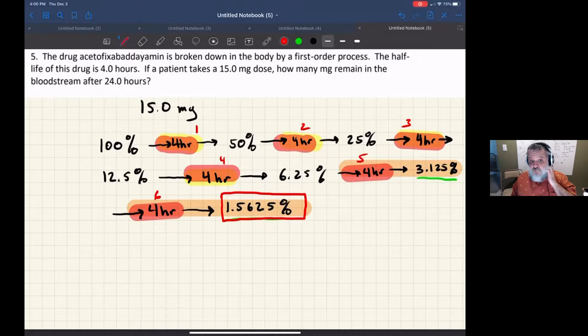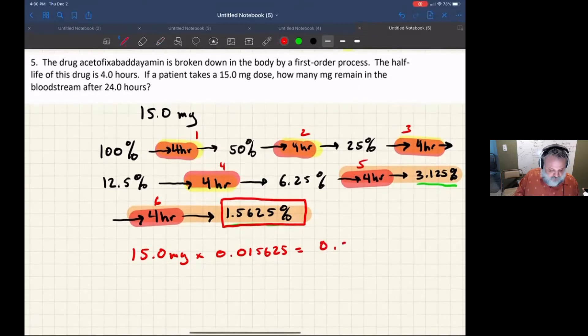And so we have 15.0 milligrams times 0.015625, what do we get there? We're going to get 0.23 milligrams, and that's what remains.